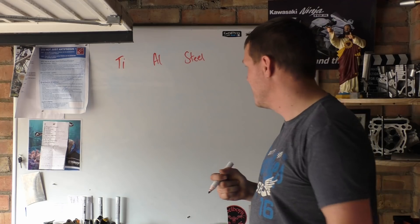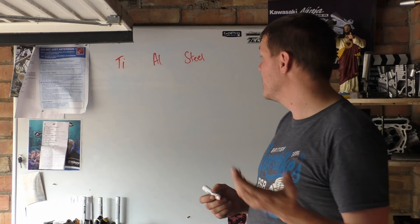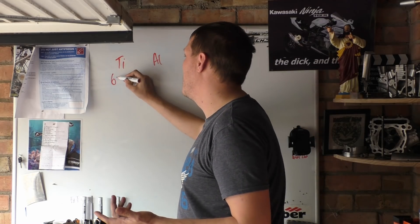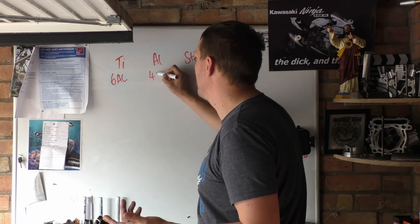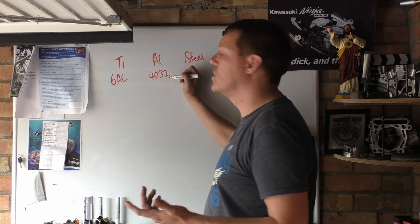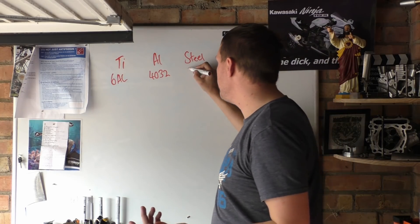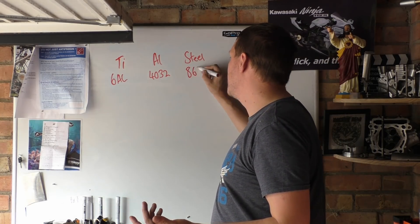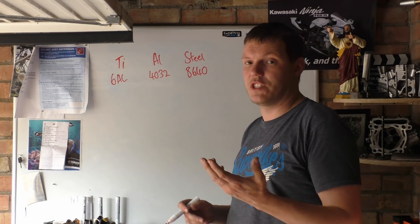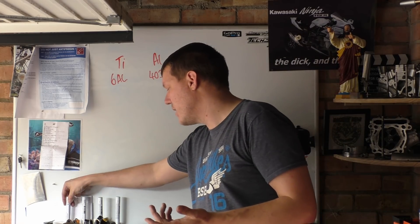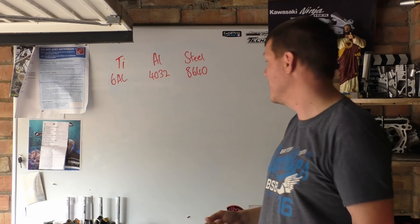So let's have a look at a few things. We're going to use Ti-6AL or something like that, and then we're going to use 4032, which is a high silicon content casting aluminium, and then 8640, which is a steel - a very good steel, a shit hot steel that they make crankshafts out of. Sockets, extension bars, and a lot of other tools like spanners as well.